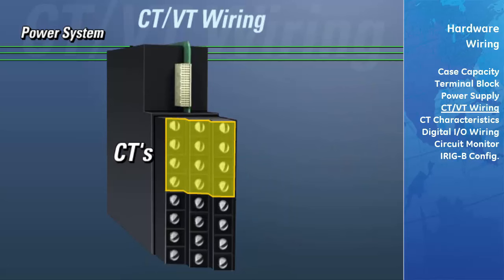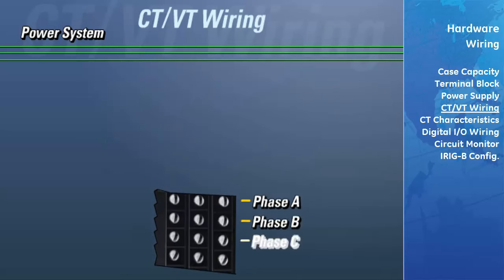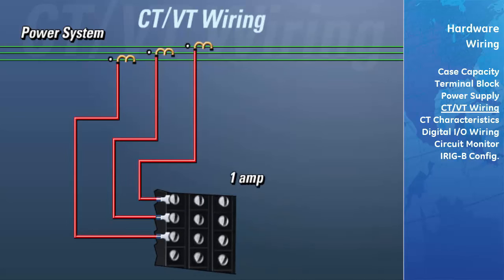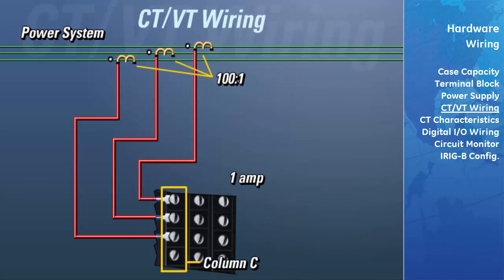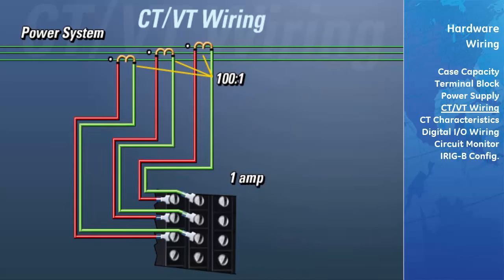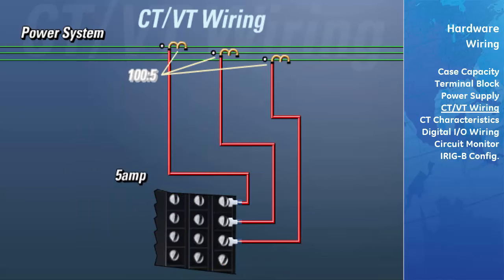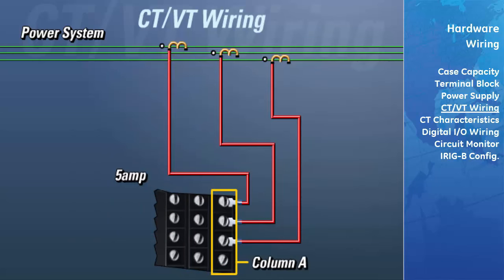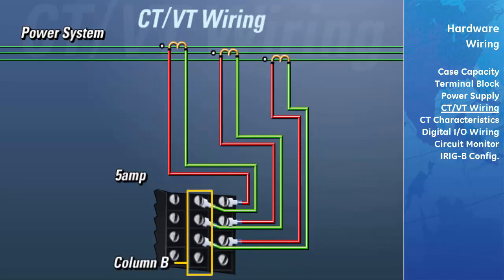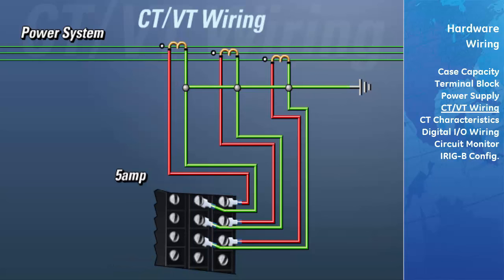For the current inputs, there is a separate row on the DSP for each phase of current. If the CTs have a 1A secondary, connect the polarity side to the column C input and the non-polarity side to the column B input. If the CTs have a 5A secondary, connect the polarity side to the column A input and the non-polarity side to the column B input. Finally, all of the non-polarity sides of each CT should be connected together and then tied to ground.